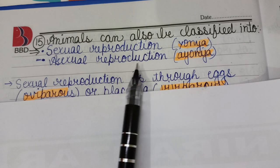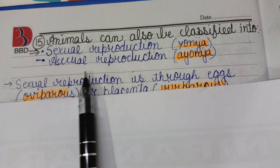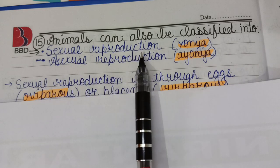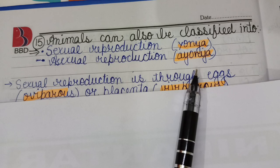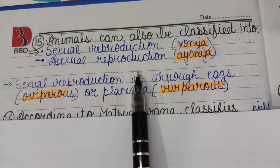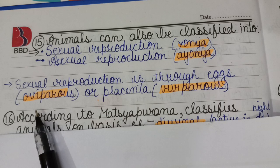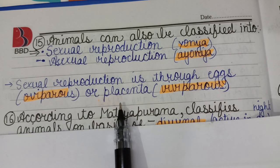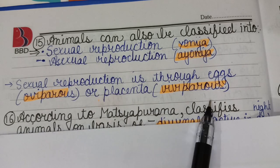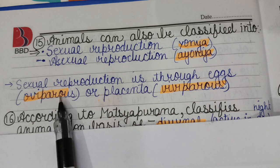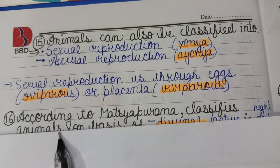Animals can also be classified on the basis of reproduction into sexual and asexual reproduction. Sexual reproduction through eggs is called oviparous, and reproduction by placenta is called viviparous. Oviparous means born from eggs; viviparous means giving birth to live young.